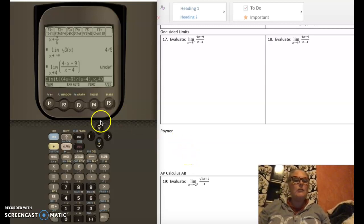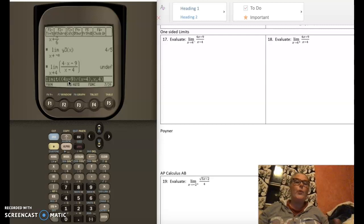Okay, so question number 16, that was the 4x minus 9 over x minus 4 as x approaches 4 is undefined. But what if I just looked from the left and from the right, what happens?